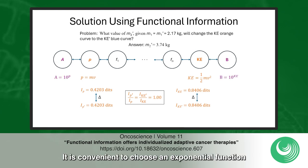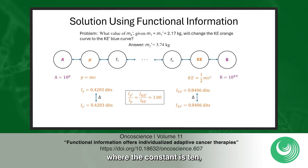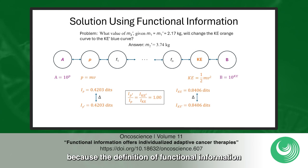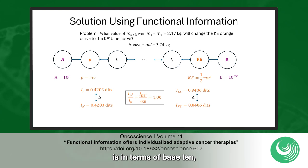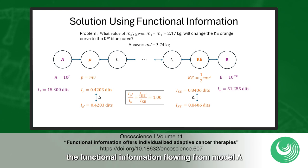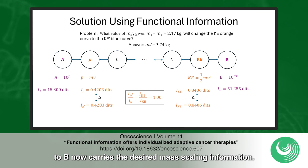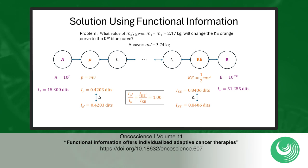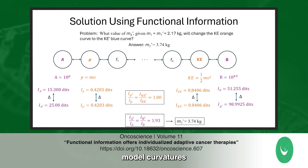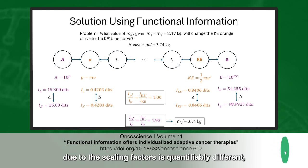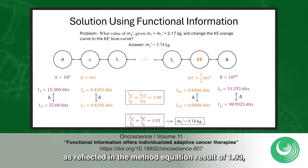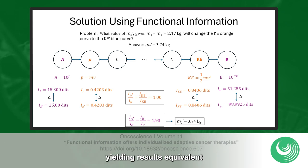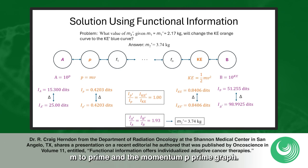To transfer the mass parameters via functional information, it is necessary to augment the mathematical chain connecting the momentum and kinetic energy models with models A and B. It is convenient to choose an exponential function where the constant is 10, because the definition of functional information is in terms of base 10. The functional information flowing from model A to B now carries the desired mass scaling information. Now the change in the model curvatures due to the scaling factors is quantifiably different, as reflected in the method equation result of 1.93, yielding results equivalent to the traditional method for mass M2' and the momentum P' graph.